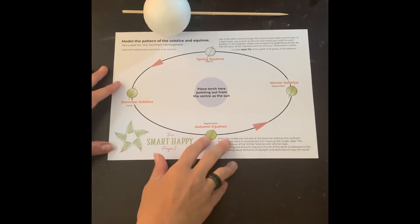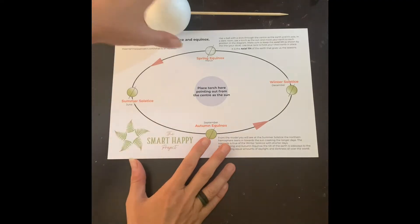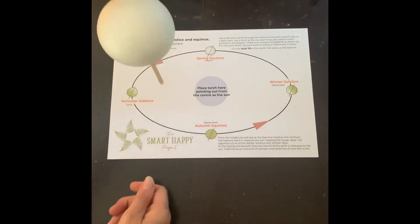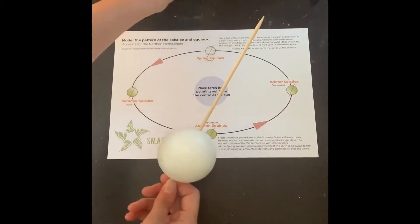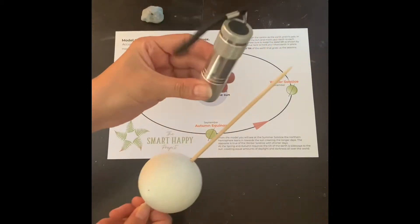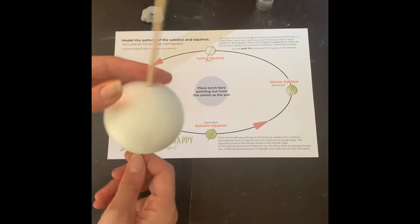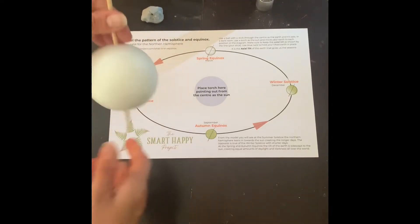Okay, right, so here we are set up. I've got the printout, my globe on a stick, a glob of blue tack and a torch. So the first thing - make sure the skewer, the stick, is going through the axis of your ball.